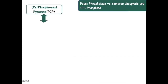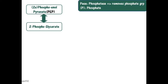PEP will be converted into 2-phosphoglycerate. This conversion is mediated by the same enzymes present in glycolysis that converted 2-phosphoglycerate into phosphoenolpyruvate — meaning these enzymes catalyze the same reactions in reverse. I'll put the list of these enzymes in the upcoming slide.